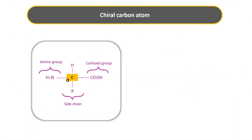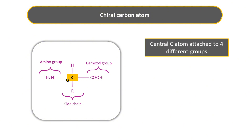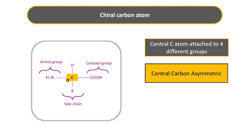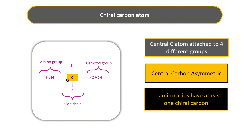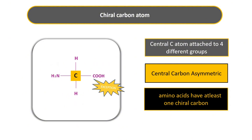The central carbon atom is also called the chiral or asymmetric carbon atom. As you can see, the central carbon is attached to four different groups: a hydrogen atom, a carboxyl group, a side chain, and an amino group — making it an asymmetric or chiral carbon. Alpha carbon is so called because it is directly attached to the functional groups; chiral carbon because it is attached to four different groups. All amino acids have at least one chiral carbon — except glycine. In glycine, the central carbon has two hydrogen atoms, so it is not a chiral carbon.